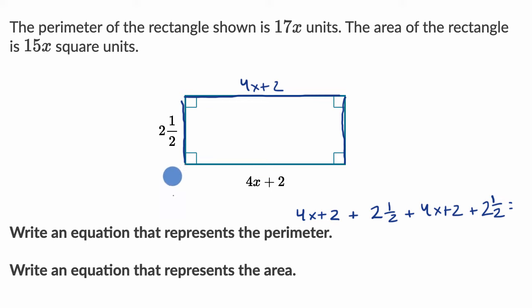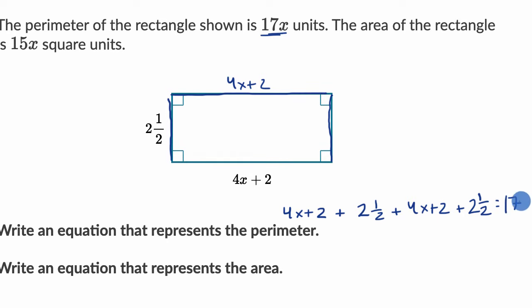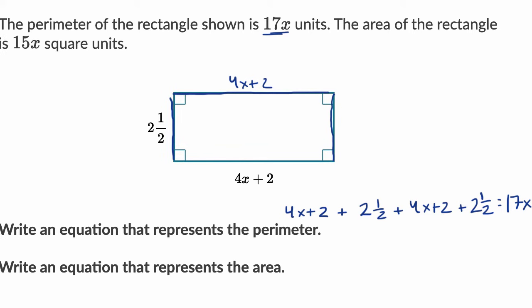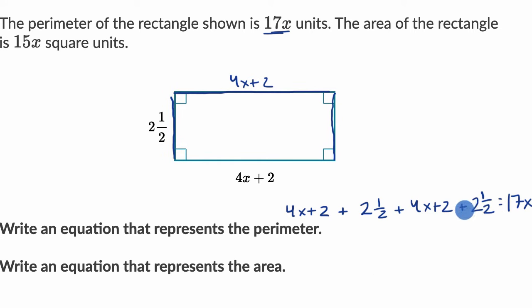Well, that's going to be equal to the perimeter, which they told us is 17x units. So that is going to be equal to 17x. And we're done. That's all they wanted. They just want us to write an equation that represents the perimeter. We don't have to solve it.